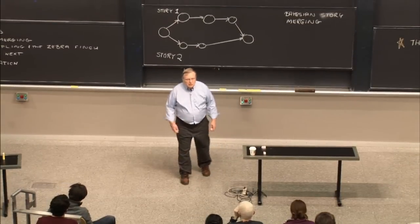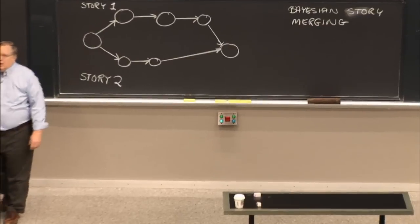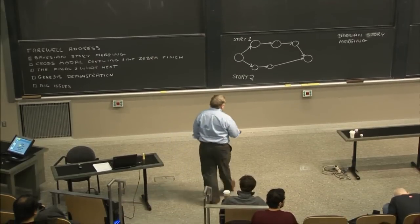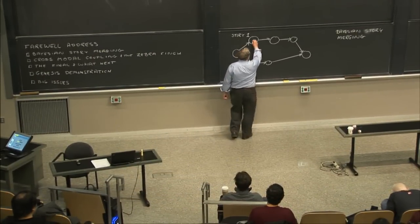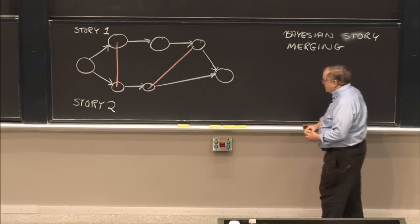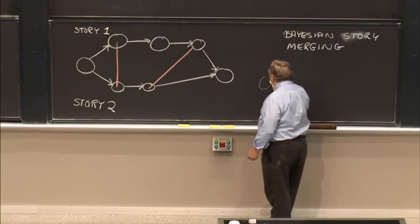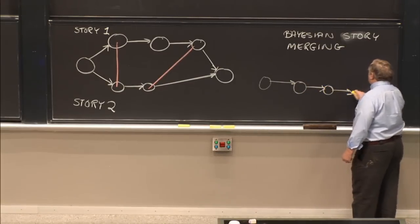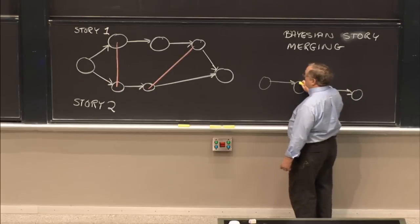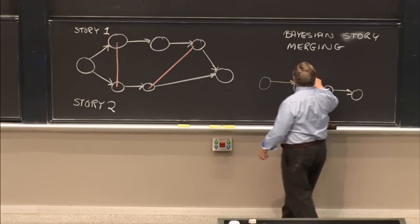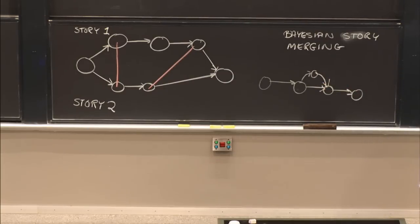Imagine you've got a couple of stories, and these circles represent the events in the story. What you'd like to get out of these stories is some kind of finite state graph that describes the collection of stories. You might discover that these two events are quite similar, and these two events are quite similar — so you use that as a basis for speculating that a more compact representation would merge them, with a possibility of another state in between. That's the notion of Bayesian story merging.